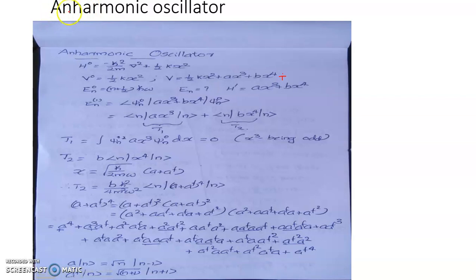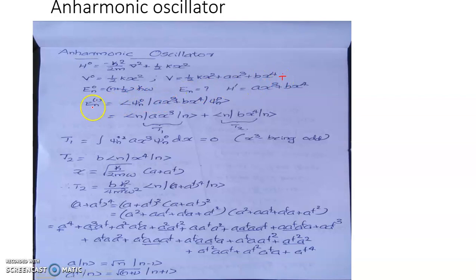For an anharmonic oscillator, we will try to solve the eigenvalues by treating the potential as a perturbation problem. The potential of the unperturbed system is half k x squared, while for the perturbed anharmonic oscillator the potential is half k x squared plus a x cubed plus b x to the fourth. The energy eigenvalues of the unperturbed system are n plus half times h-bar omega, and the perturbed part of the Hamiltonian is clearly a x cubed plus b x to the fourth.